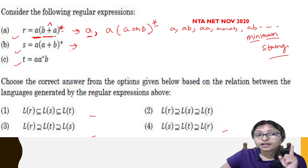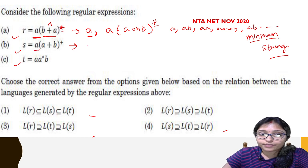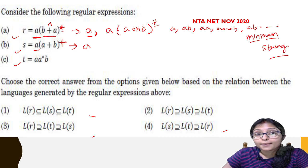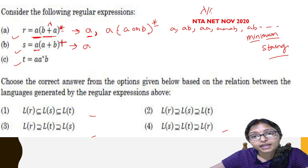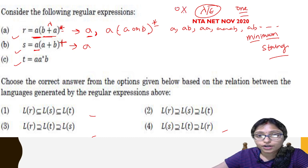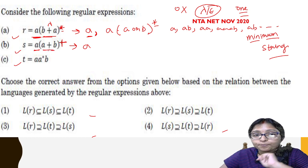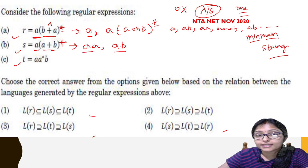Now for the next expression: here 1A is mandatory. After that you can see there is a plus. What is the meaning of plus? Plus means at least one time you have to take — lambda or epsilon is not allowed. Zero occurrence is not allowed. So A or B — you must take at least one. So the minimum string here is AA or AB.